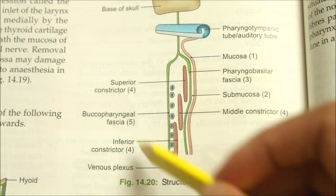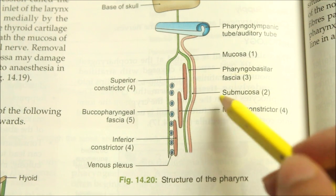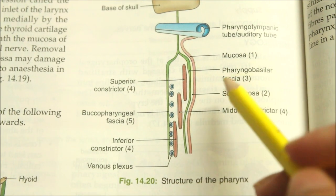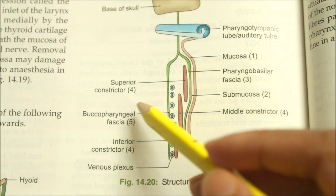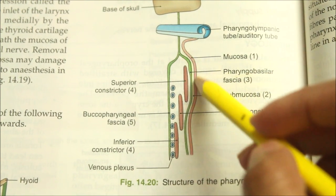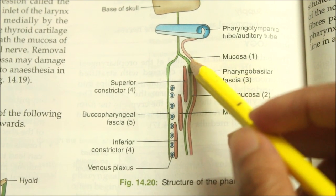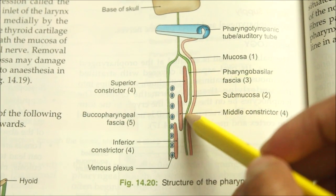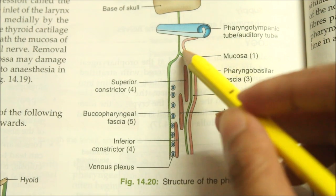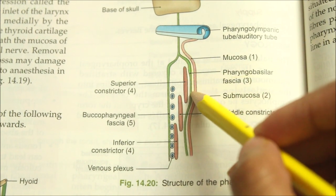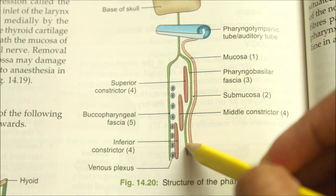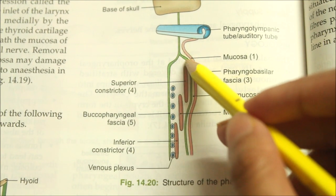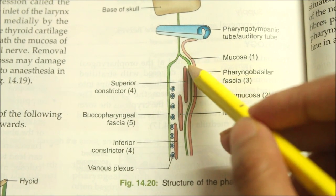Now let's learn about the structure of the pharynx. The wall of the pharynx is composed of 5 layers from within outwards. First is the mucosa; second is the submucosa; third is the pharyngobasilar fascia — a fibrous sheet internal to the pharyngeal muscles. It is thickest in its upper end and posteriorly, where it forms the pharyngeal raphe.